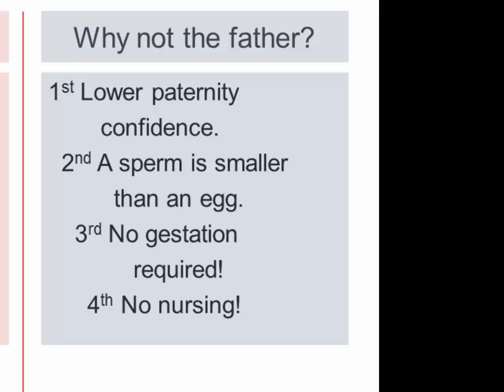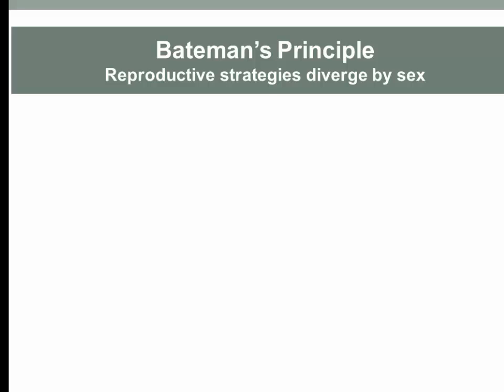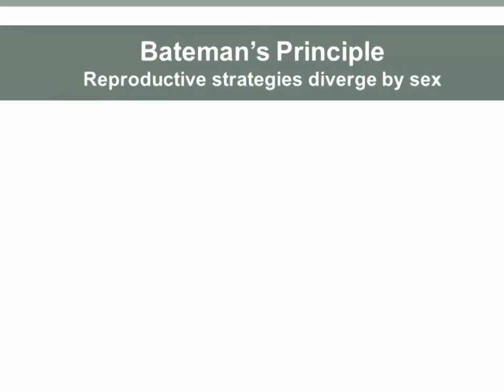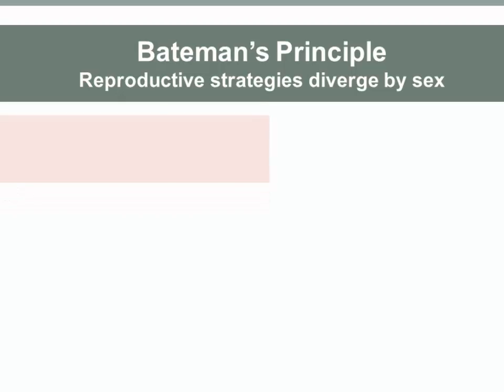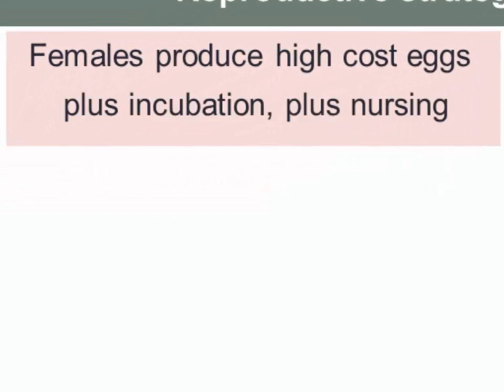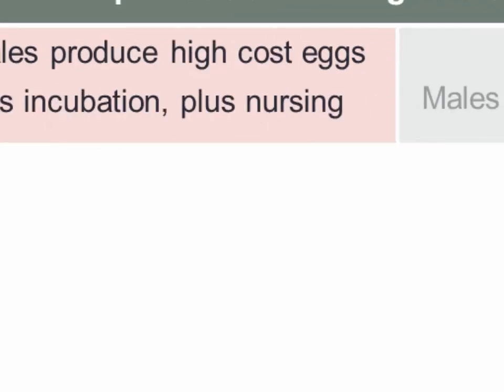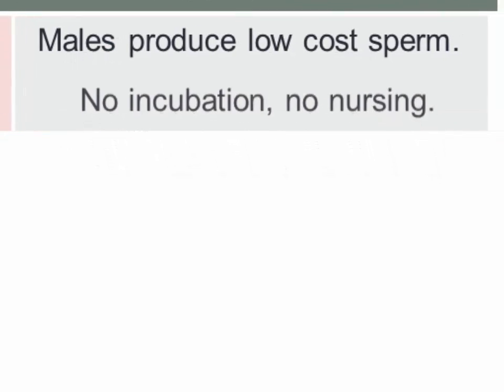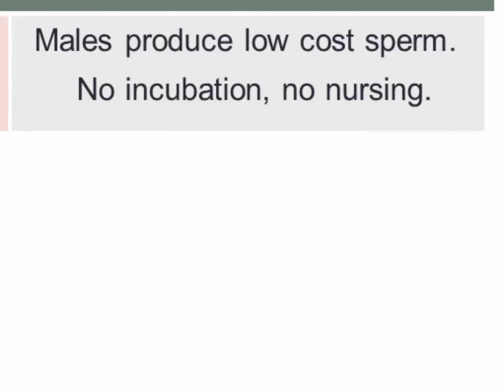This shapes the patterns of sexual selection in divergent ways. This is called Bateman's Principle — that reproductive strategies diverge between the sexes. Females produce high-cost eggs, whereas males produce low-cost sperm. There's no pregnancy for males and no nursing afterward.